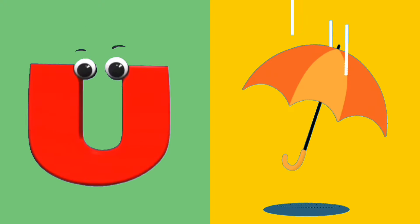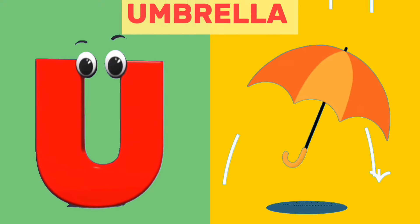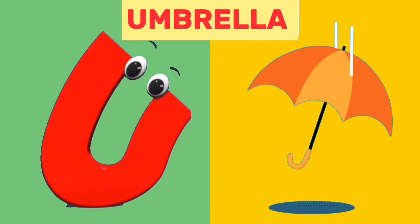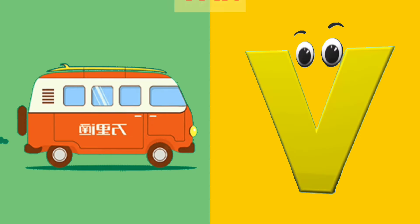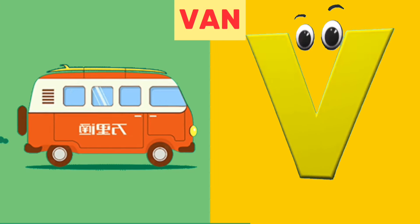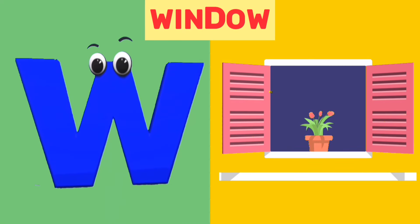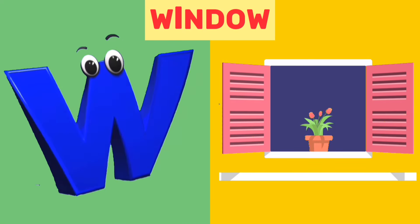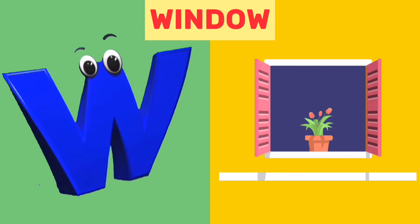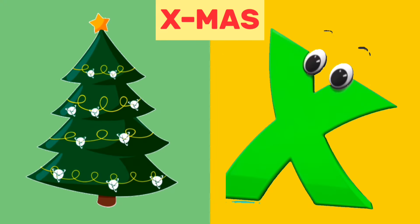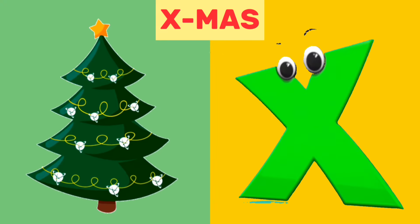U is for umbrella, u, umbrella. V is for van, v, van. W is for window, w, window. X is for Xmas, X, Xmas.